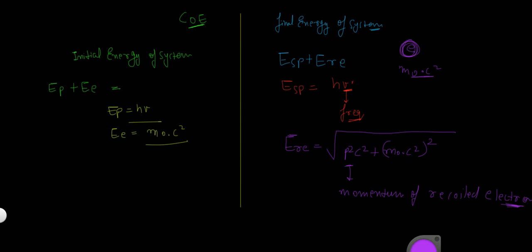So, now equating both the equations, what we get? We get e initial equals to e final. This is e final and this is e initial. So, let me write that. h nu plus m0 c squared is equal to h nu dash plus under root of p squared c squared plus m0 square c to the power of 4.